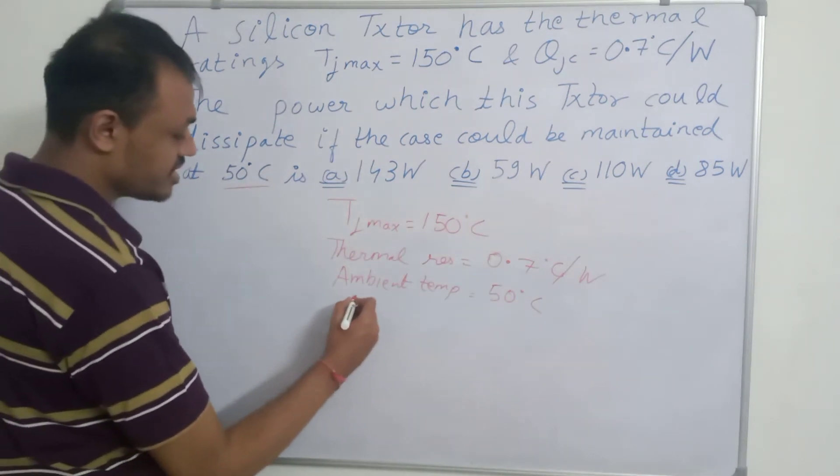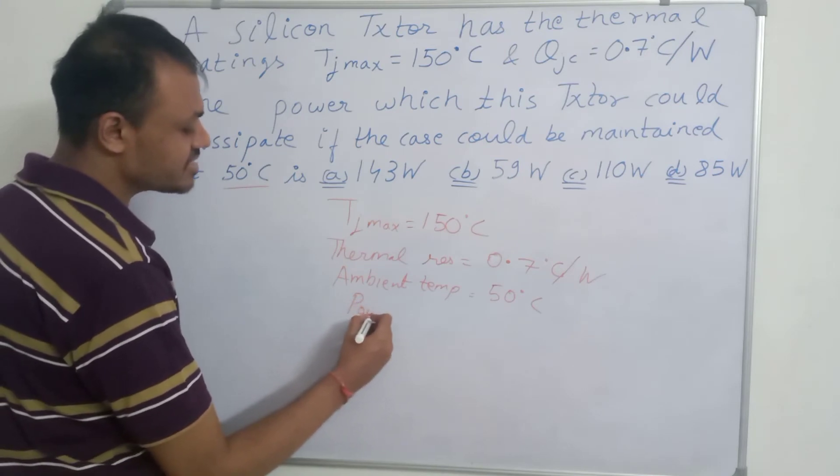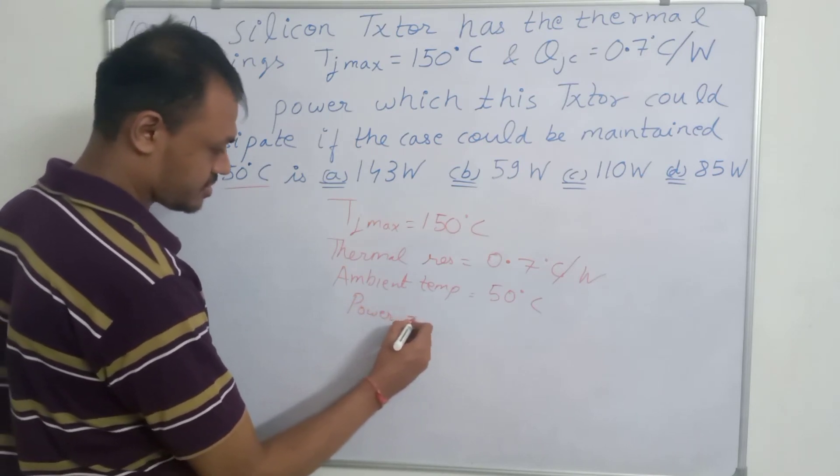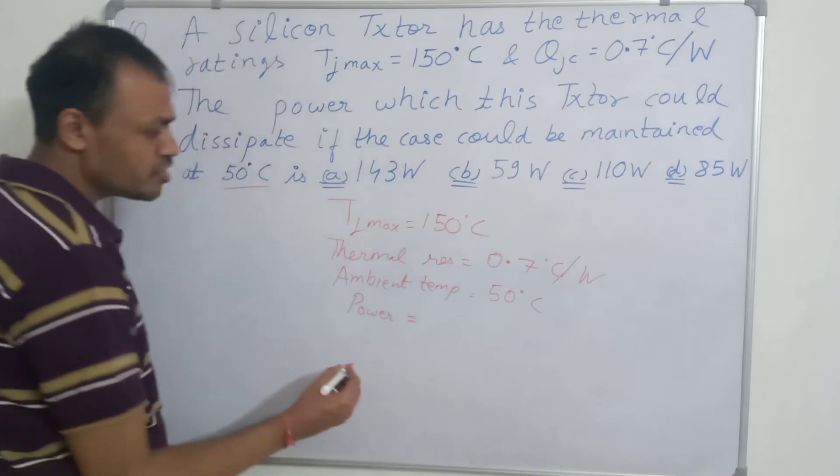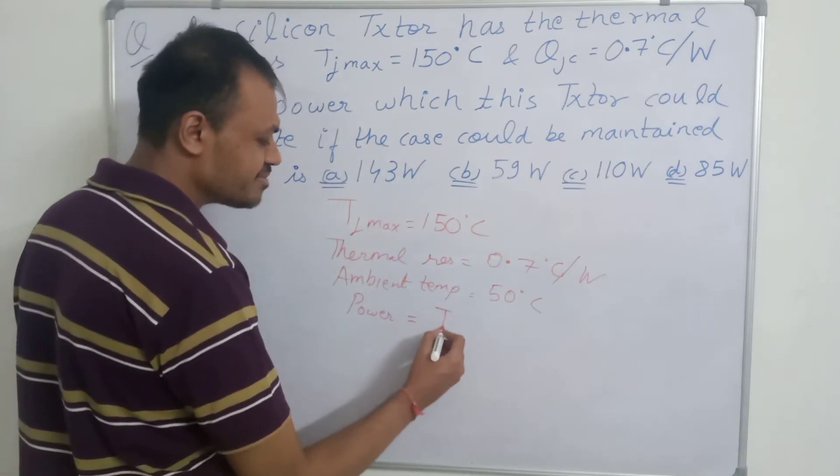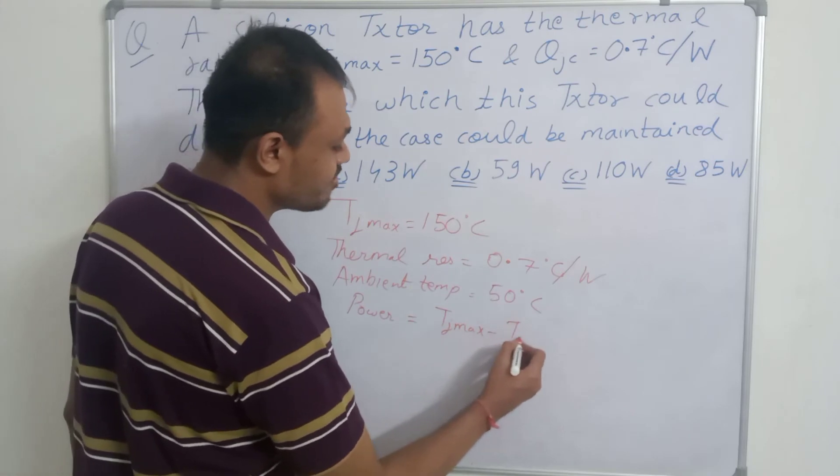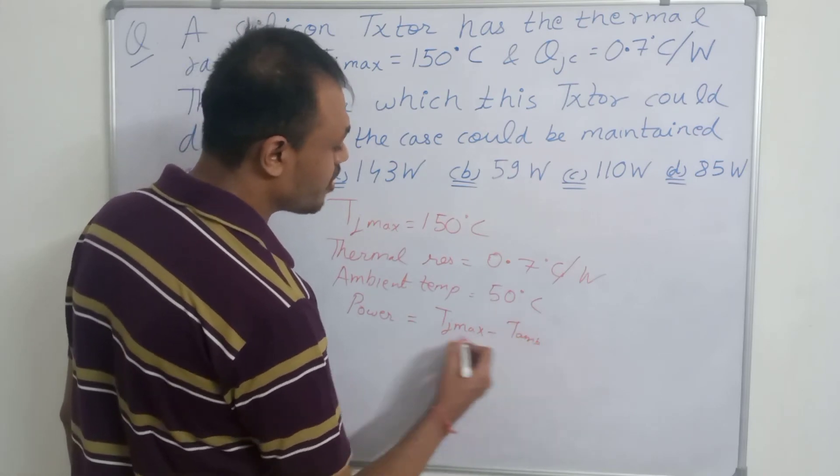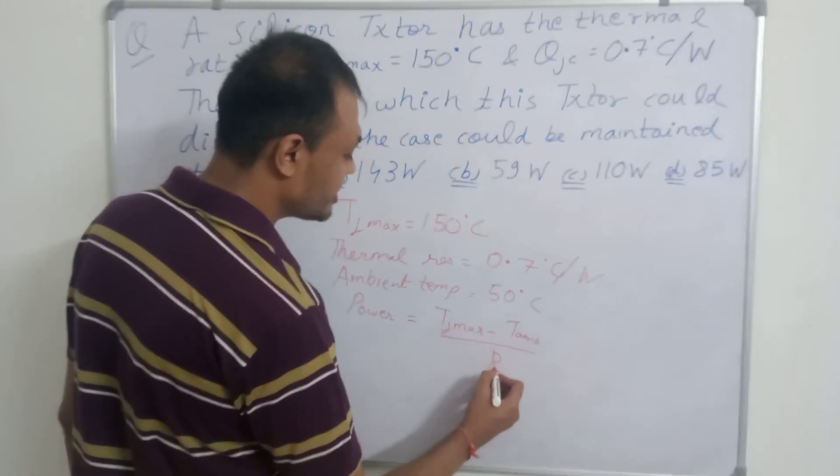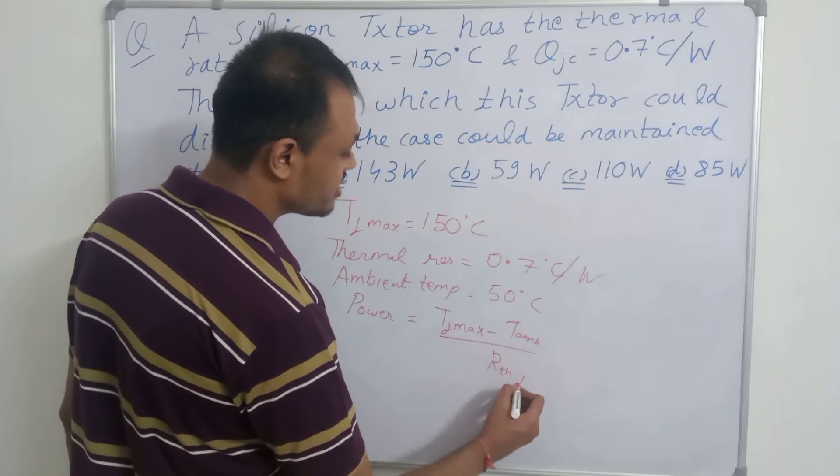For heat sinks, the power dissipated is given as the maximum power which could be dissipated is equal to the maximum junction temperature TJmax minus ambient temperature upon thermal resistance RTH between junction and case.